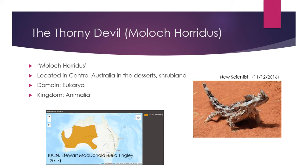The Thorny Devil, otherwise known as the Moloch horridus, which is its scientific name, or just Moloch for short, is an Australian lizard that usually lives on arid scrublands and deserts that cover most of central Australia. The habitat of the Thorny Devil consists of mostly regions of sandy loam soils.